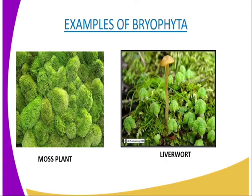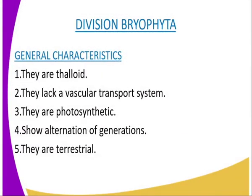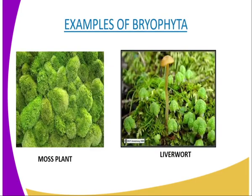They have developed rhizoids for anchoring and absorbing water together with dissolved mineral salts. The fifth characteristic is that they show alternation of generations. What we mean by this is that the gamete-producing gametophyte is the persistent plant. The spore-producing sporophyte is borne on the gametophyte, on which it is dependent. The sixth characteristic is that male gametes are produced by antheridia and female gametes by archegonia.